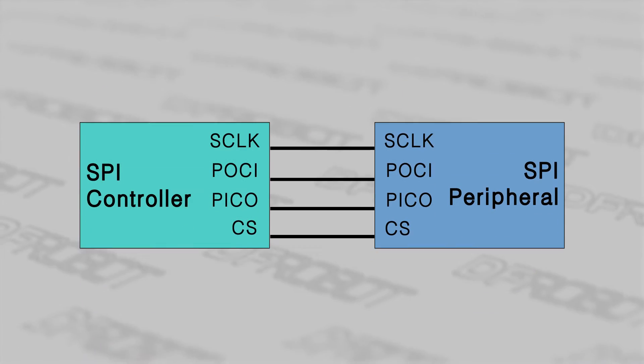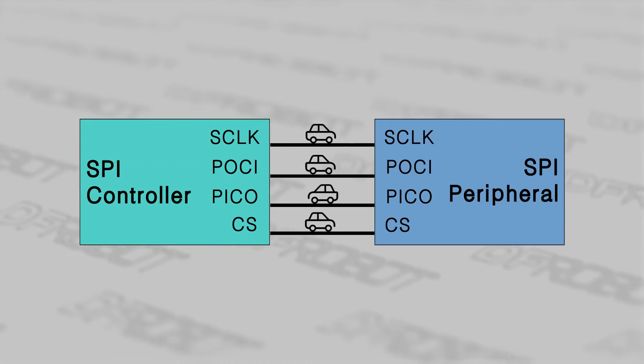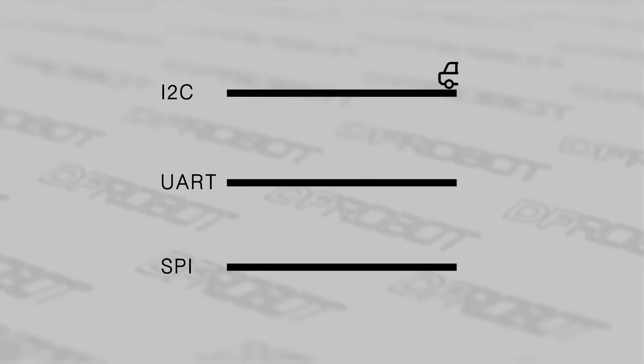SPI stands for Serial Peripheral Interface. It features full duplex communication and comes with a faster data transmission speed than I2C and UART.